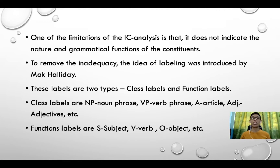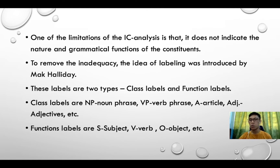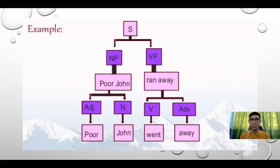One of the limitations of immediate constituent analysis is that it does not indicate the nature and grammatical functions of the constituents. To remove this inadequacy, the idea of labeling was introduced by Halliday. Those labels are of two types: class labels and function labels. Class labels include noun phrase, verb phrase, article, adjectives, and so on. Function labels include subject, verb, object, and so on. For example, in the sentence 'poor John ran away,' using IC analysis we divide it into 'poor John' and 'ran away' as the immediate constituents.